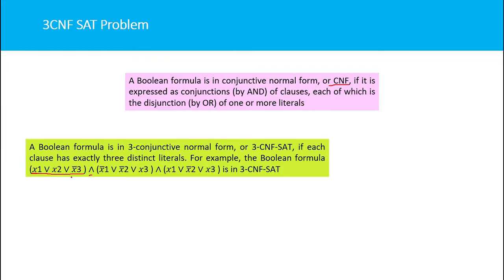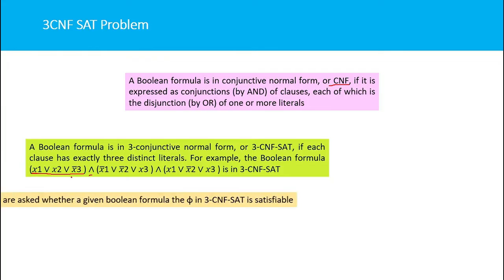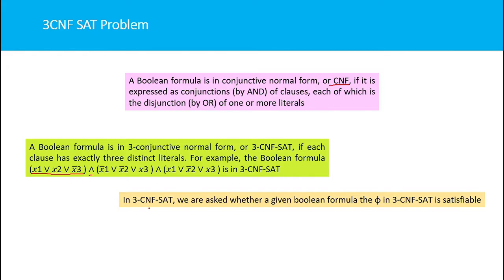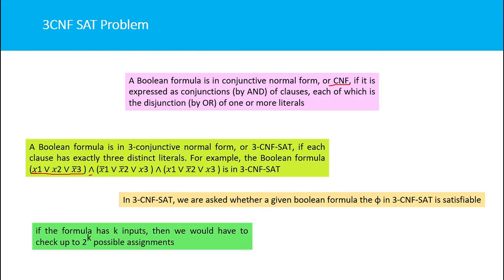Our problem is: given a boolean formula expressed in 3CNF form, whether it is satisfiable or not. In 3CNF SAT, we ask whether a given boolean formula in 3CNF is satisfiable. To verify, we substitute values for x1, x2, x3, etc. With three variables there are 2^3 possibilities, so this is not polynomial time. Therefore 3CNF SAT is an NP-complete problem.